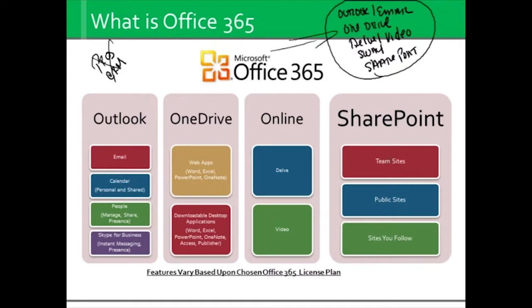First off, we have Outlook. If you have Outlook installed on a local machine, you know that Outlook has email, a calendar, people — which is your contacts — and also Skype for Business. Skype for Business is usually a different application that can be installed side-by-side with Outlook. However, the functionality is also in Outlook where you can right-click on someone in the Outlook window and actually send them an instant message. So that's different and yet integrated as well.